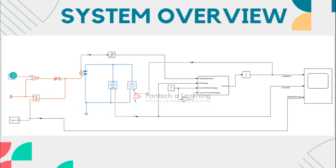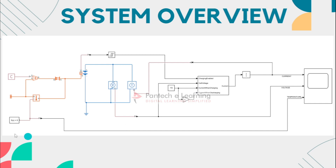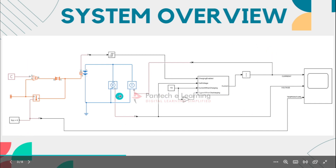Next is the constant ambient temperature block. This block represents a constant ambient temperature that can be applied to the battery during the simulation. It helps in modeling the effect of temperature on the battery's performance. This is our overview of the simulation model.